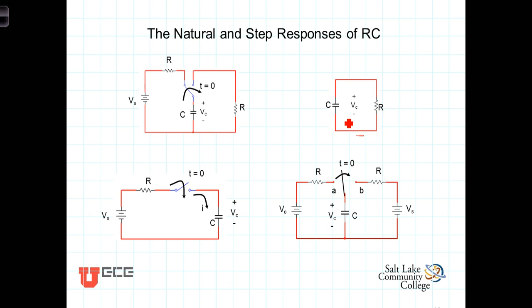As we know, the current flowing in this circuit, I equals C dV dt. From this derivative, we can deduce that you can't instantaneously change the voltage across the capacitor.